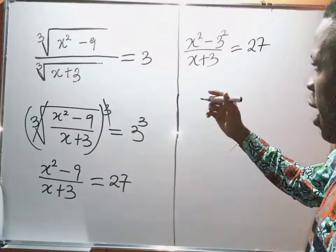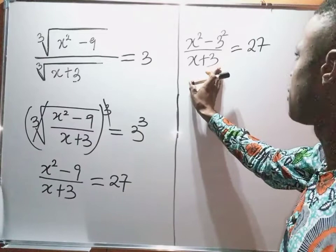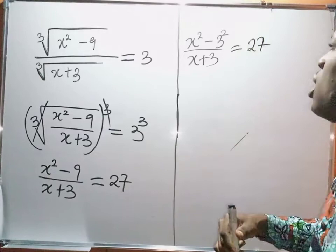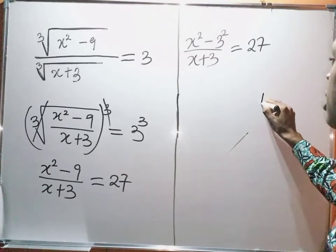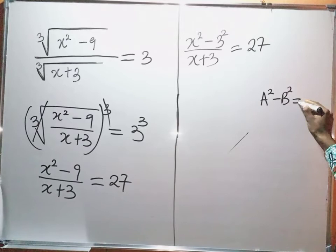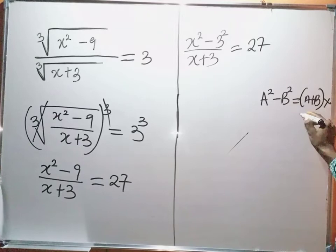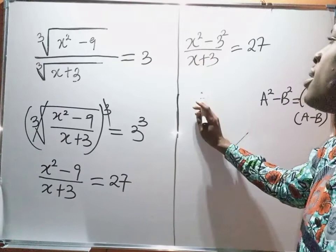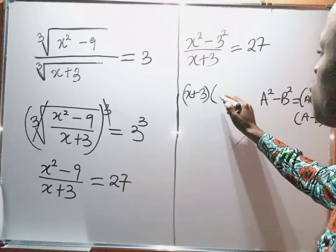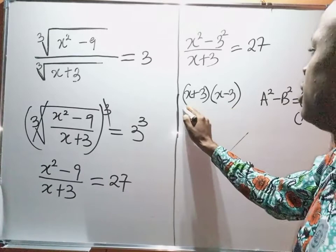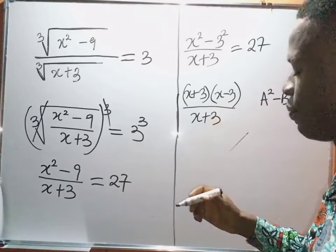So at this point, if you observe the numerator on the left-hand side, you can see that this is x squared and this is 3 squared, with subtraction — this is a difference of two squares. You know that a squared minus b squared equals a plus b times a minus b. So applying the difference of two squares rule, x squared minus 3 squared divided by x plus 3 becomes x plus 3 times x minus 3, divided by x plus 3, equal to 27.